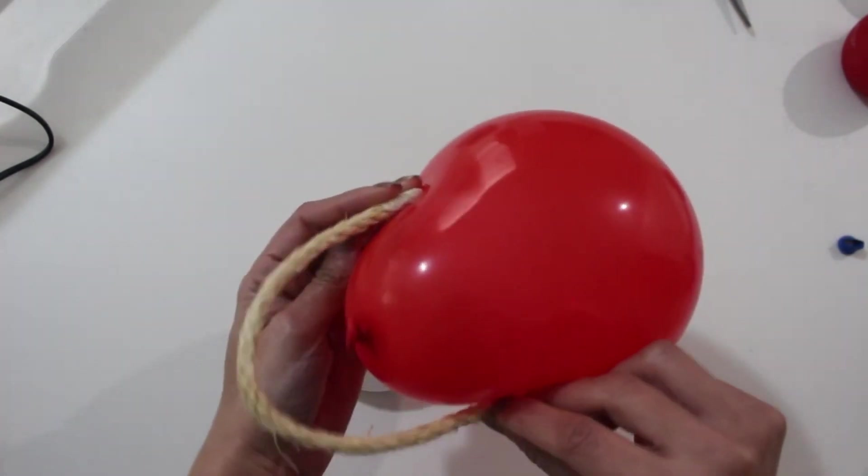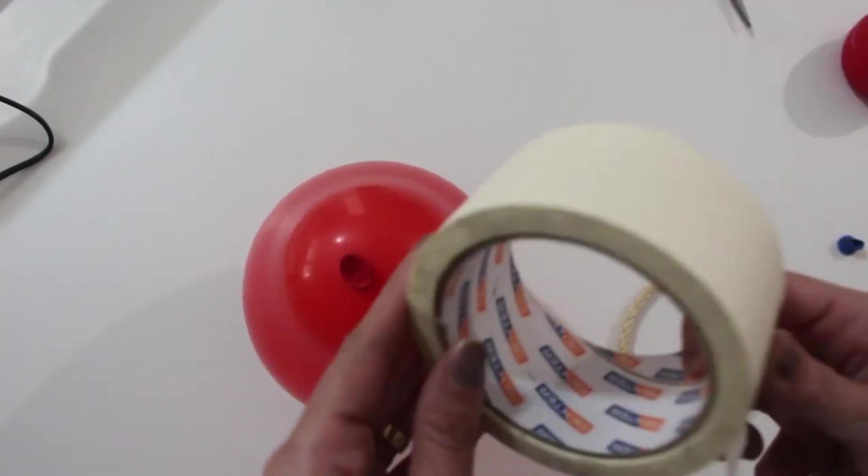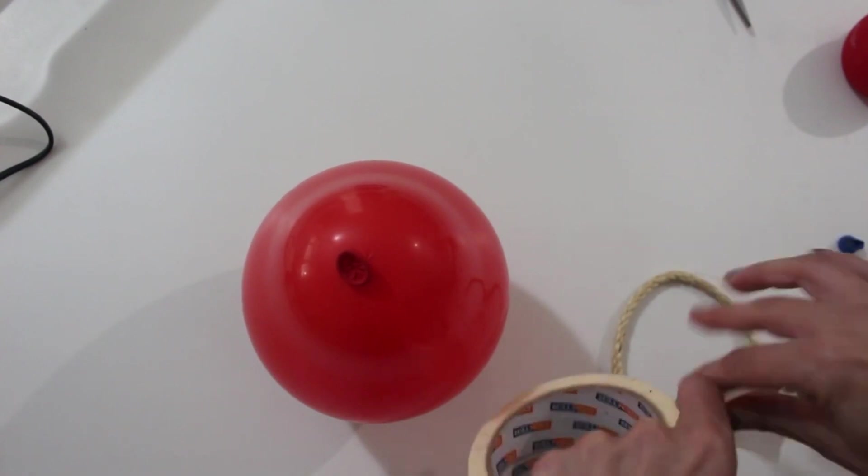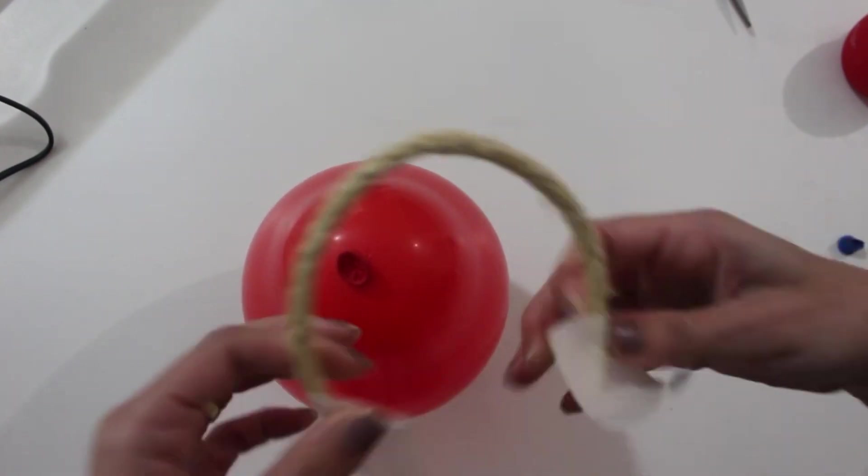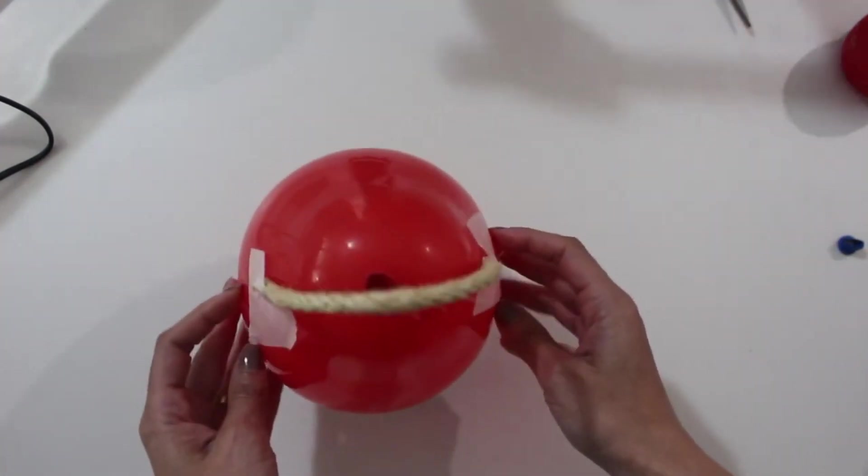Once it's blown up, you're gonna need some twine string. Mine is six millimeter string and I'm gonna cut out a piece of string. This one here is 23 centimeters and I stick it on using some masking tape.